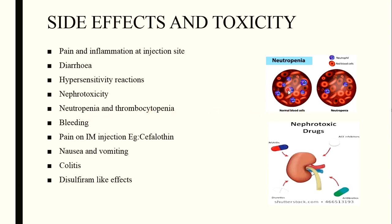Neutropenia means a reduced number of neutrophils; thrombocytopenia means a reduced platelet count, and patients using cephalosporins continuously may experience bleeding. Pain on intramuscular injection is noted specifically for cephalothin. Nausea and vomiting are common. Colitis — inflammation of the colon — is another side effect. Disulfiram-like effects are also observed in some patients. This concludes the topic of cephalosporin structures, uses, mechanism of action, and side effects. Beta-lactamase inhibitors will be covered in the next video.